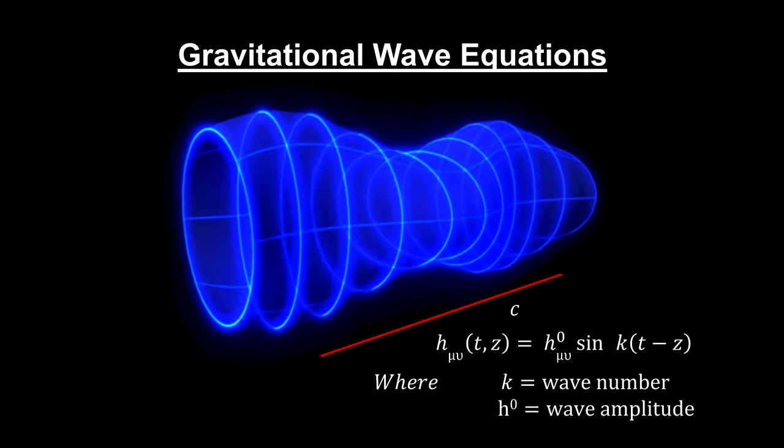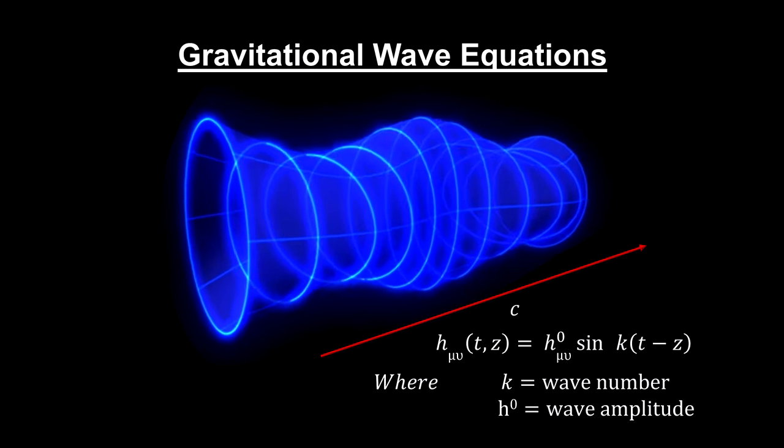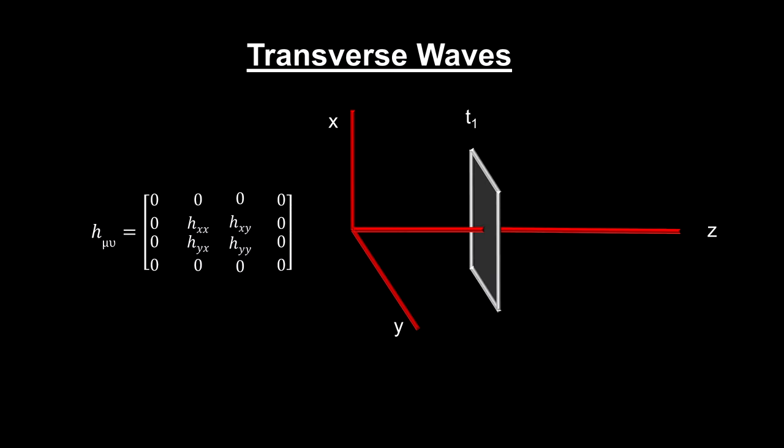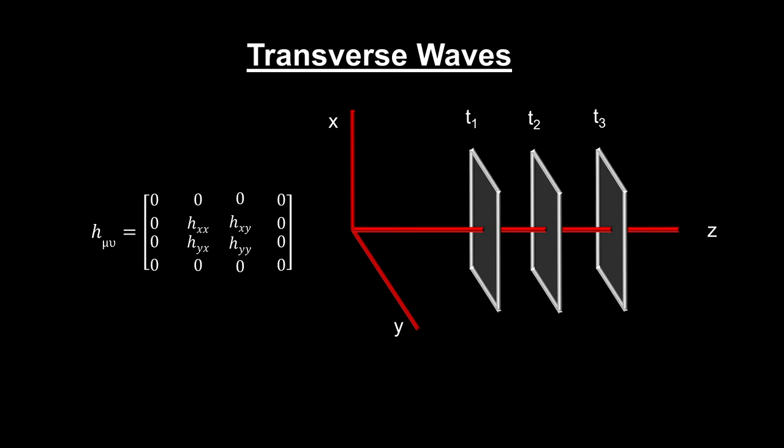And it travels at the same speed as light. As the wave moves down the z-axis, planes at different times experience different values for the metric used to measure distance on the plane. This makes the wave a transverse wave, just like light.